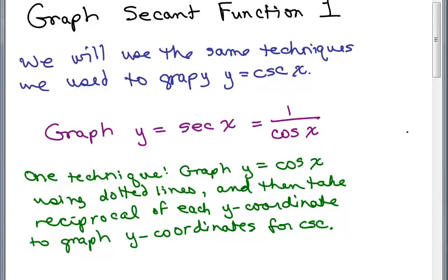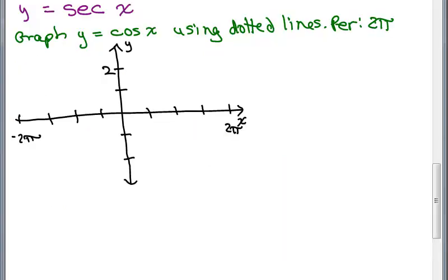You do have to know how to graph y equals the cosine of x to use this technique, which is to graph y equals cosine of x using dotted lines and then take the reciprocal of each y-coordinate to graph the y-coordinates for secant.